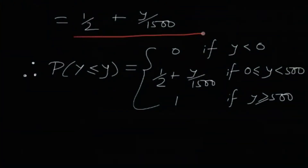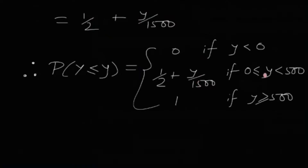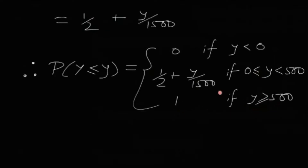Combining these, the CDF of Y is: F(y) = 0 if y < 0; F(y) = 1/2 + y/1500 if 0 ≤ y < 500; and F(y) = 1 if y ≥ 500. We now have the complete CDF of Y and can answer each part of the question.